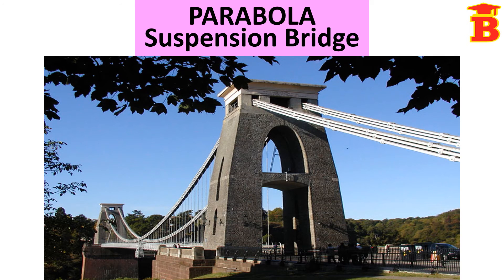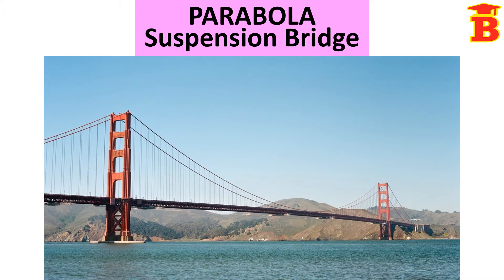Let us see the pictures. This is a suspension bridge. Here, see this parabola shape — this is open upwards. This is also a suspension bridge with a parabola shape, open upwards. In this parabola, note that this is the vertex. The lowest point of the cable is the vertex, and these two are pillars. Here we have cables called supports.